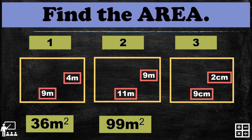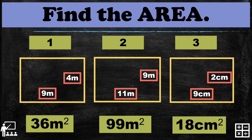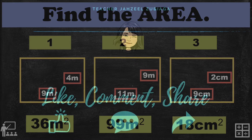The last rectangle has an area of 18 meters squared — just multiply nine by two to get eighteen. Remember the proper unit is squared units. See you on my next lesson!